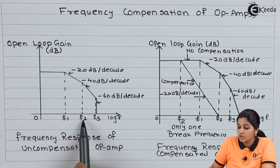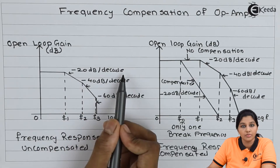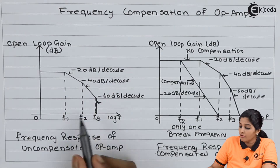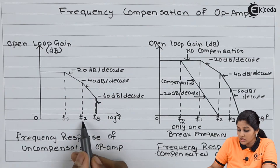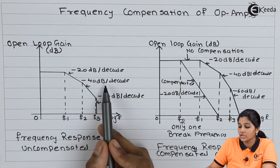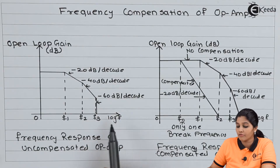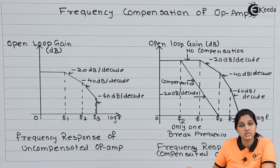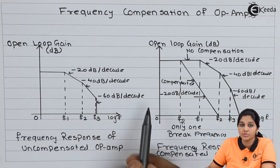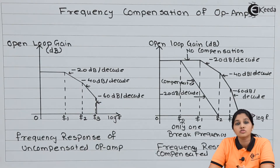From frequency f1 to f2, the gain of the op-amp is reduced by minus 20 dB per decade. From the frequency range f2 to f3, the gain is reduced by minus 40 dB per decade. And from f3 to f4, the gain is reduced by minus 60 dB per decade, and so on.